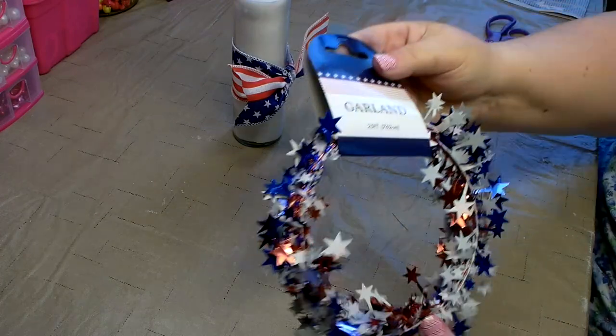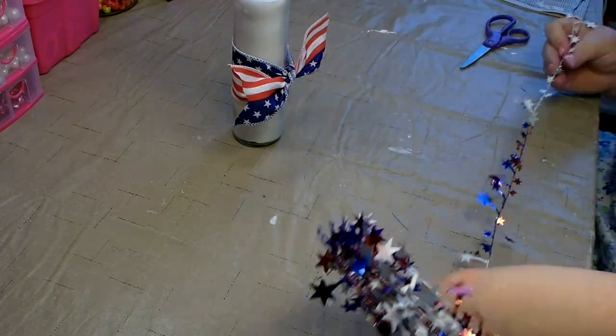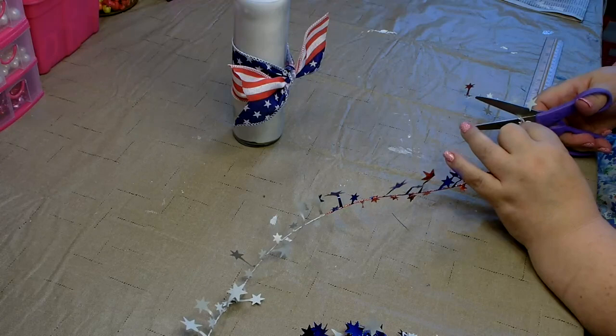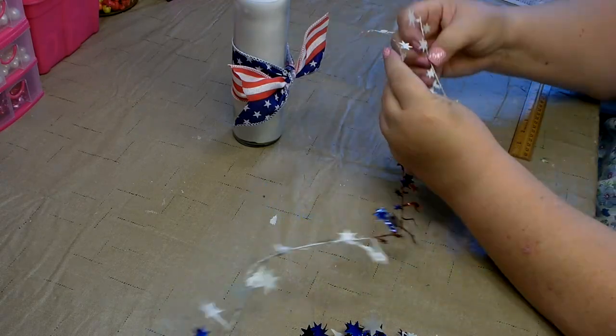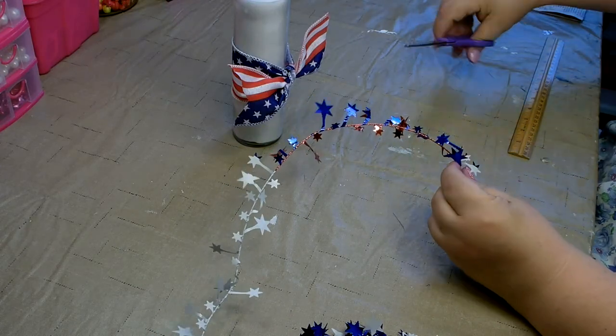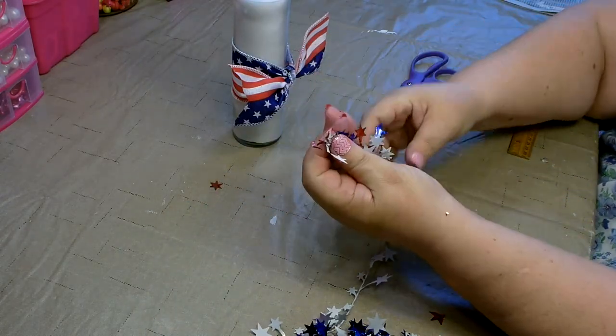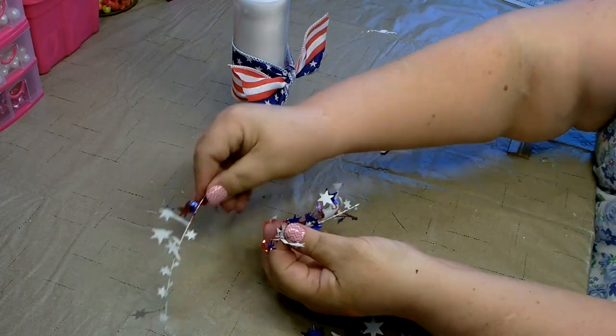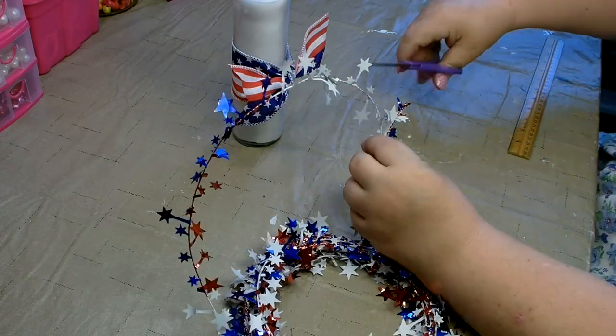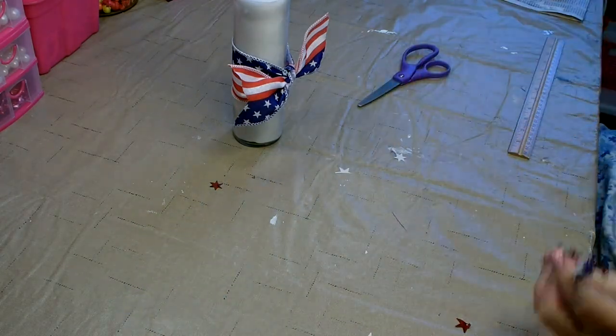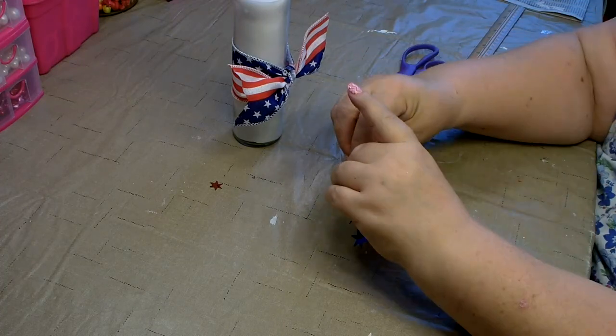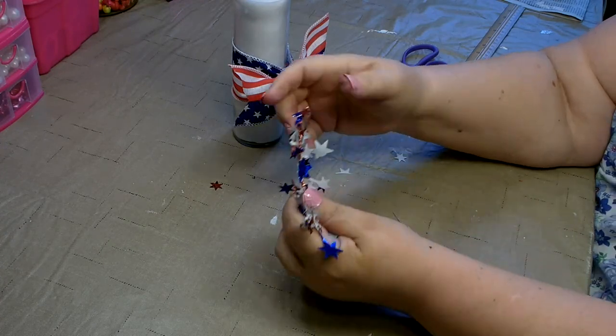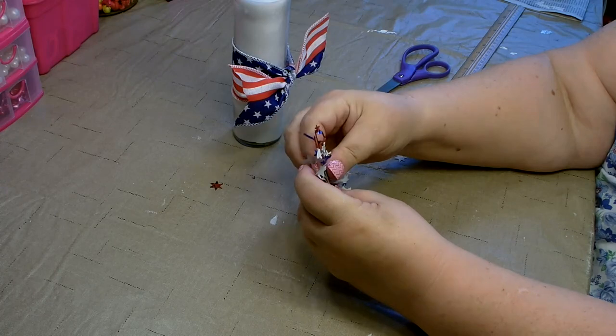You'll also need some garland, I picked this up from the Dollar Tree. Go ahead and cut four pieces at four inches in length for each candle. You'll want to take the four pieces of garland and twist them together in the center, then place it behind the knot on the candle.